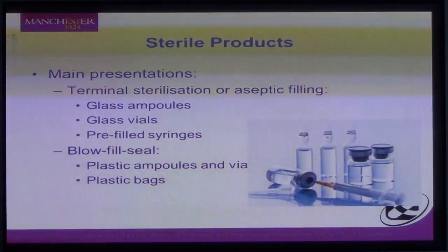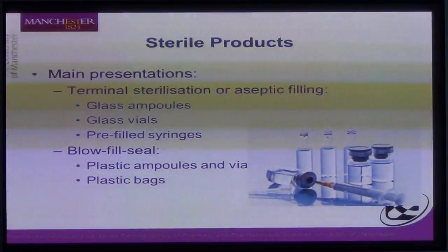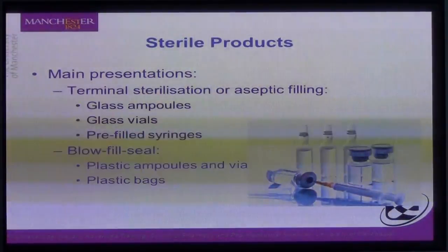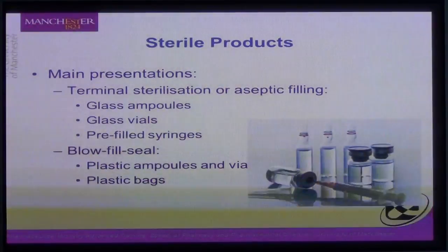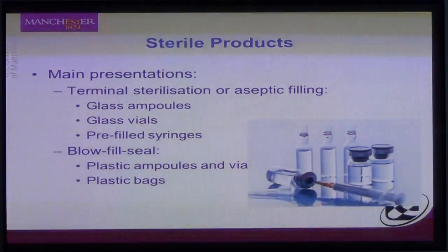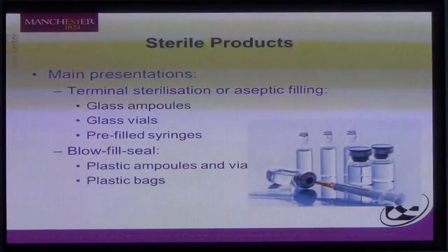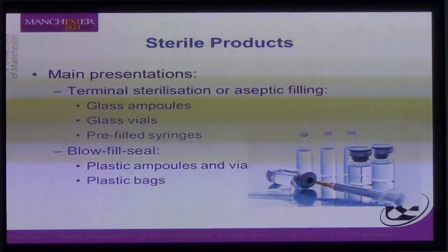There are different presentations. Terminally sterilised or aseptically filled products tend to be made in glass ampoules, glass vials, or as pre-filled syringes. There is an alternative method called blow-fill-seal, which straddles the boundary but should always be classed as an aseptic filling process. Blow-fill-seal is used for manufacturing plastic ampoules and vials or putting product into plastic bags, and it reduces risk somewhat by sealing within the filling machine itself.